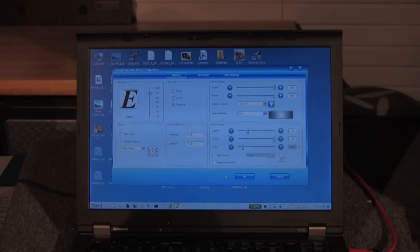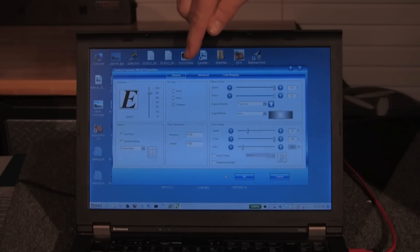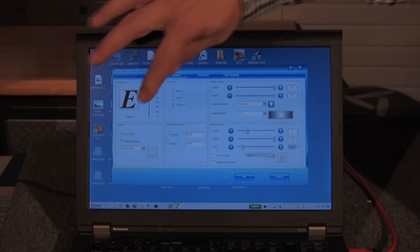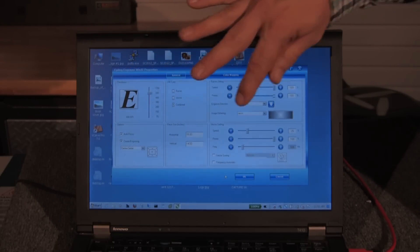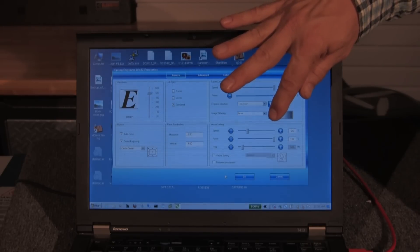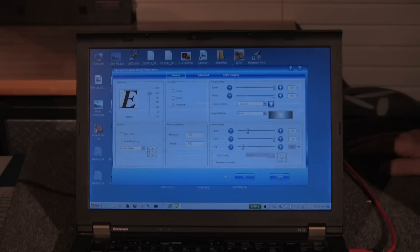For this 50 watt unit, we set the engraving speed to 100% and used 100% power and a setting of 600 dpi. The machine is set to combination cutting. For the vector cutting settings, we used speed of 25% at 100% power and a frequency of 500.